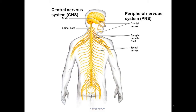Once the brain has analyzed this and wants a particular reaction to occur, it sends that information down the spinal cord and out through the peripheral nervous system on motor neurons or motor nerves. These are the nerves that are responsible for contracting the muscle and eliciting the response that the brain has ordered.